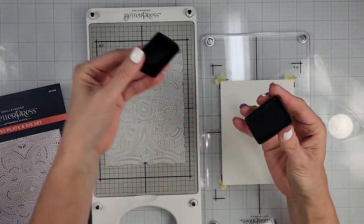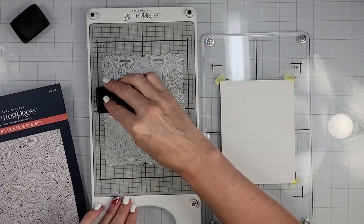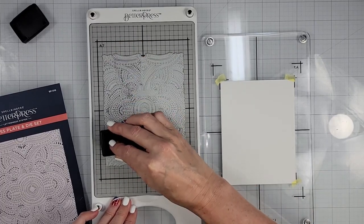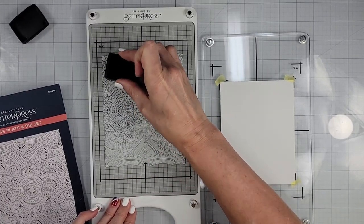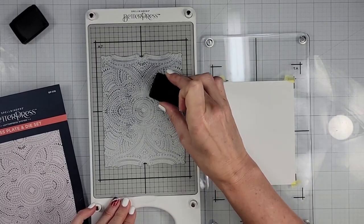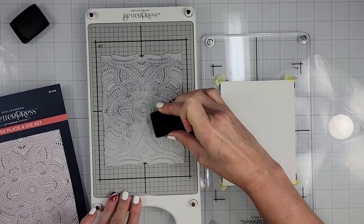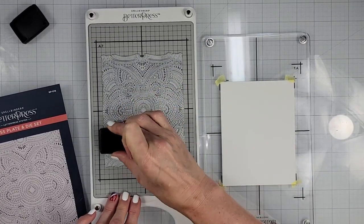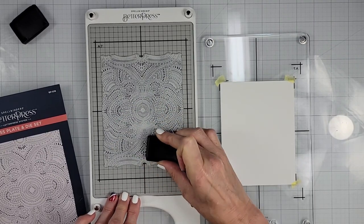I'm going to take my black here and I'm just going to ink it up. And it says you do a little bit of pounce and pivot. So I'm just pouncing and pivoting.